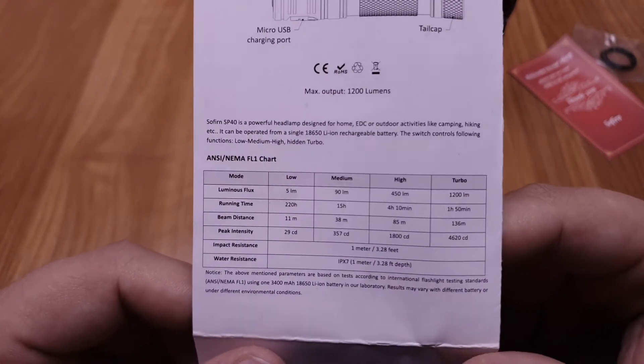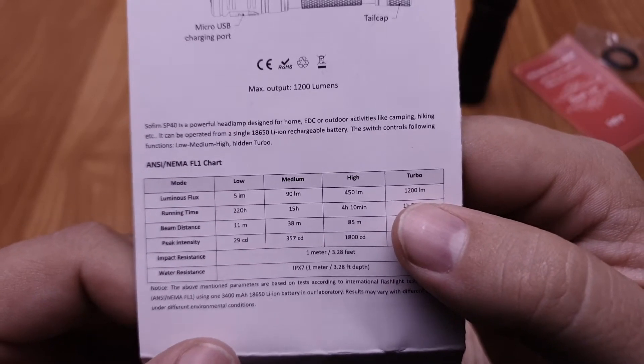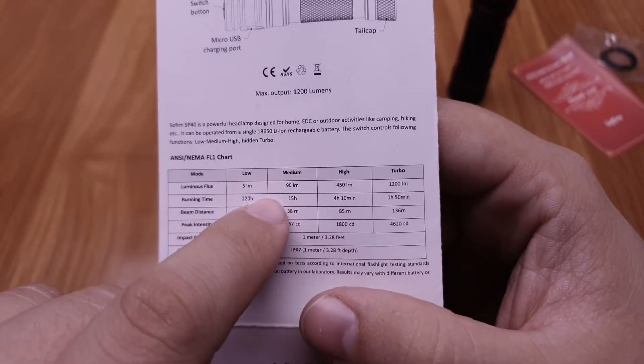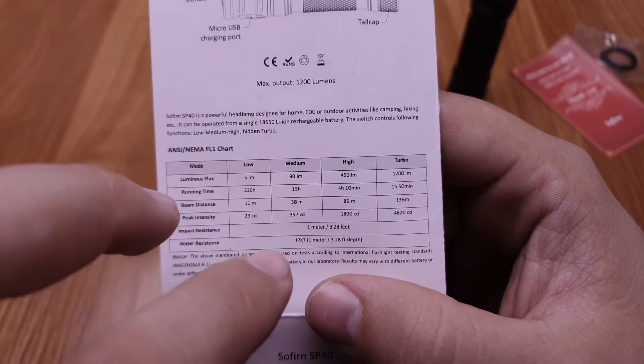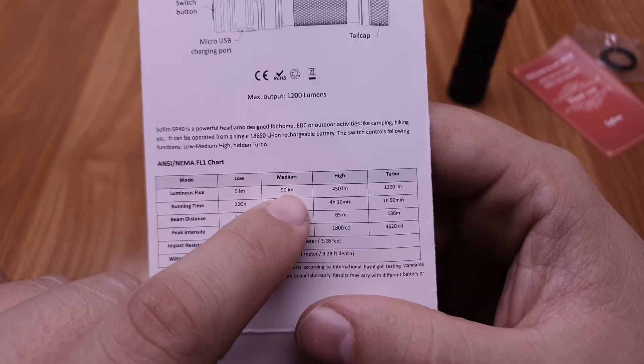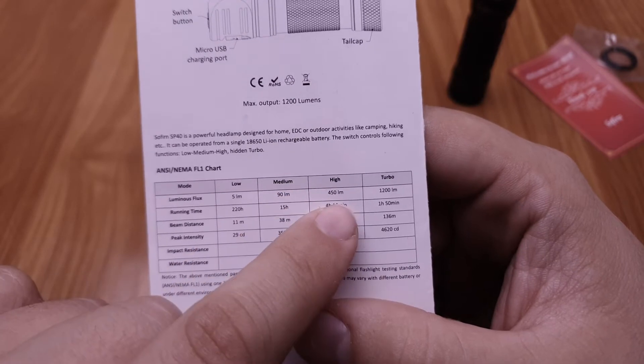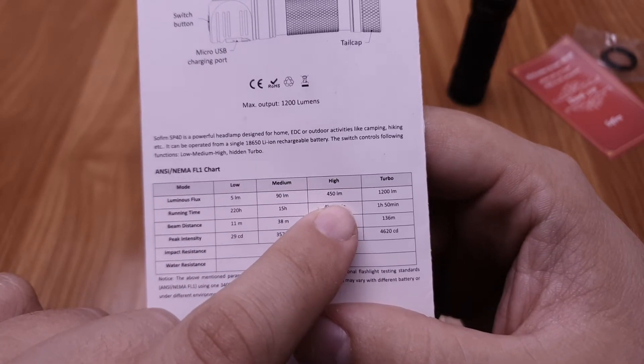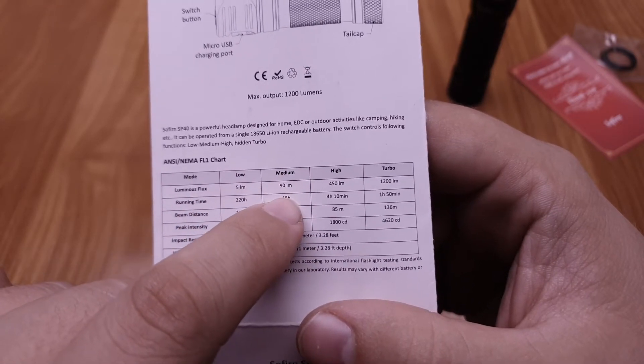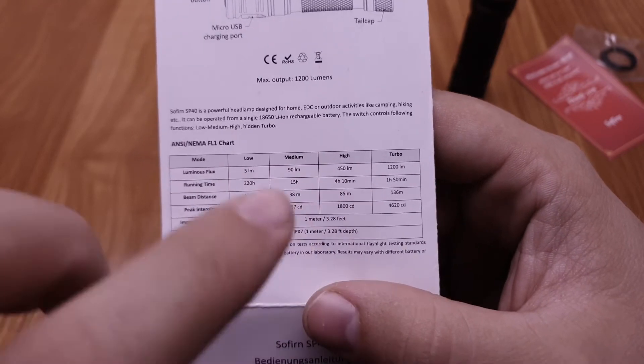So, the turbo mode is 1200 lumens claimed. I measured 1000 lumens, which is pretty okay. And what is not perfect, I think. From the 5 lumen low to the medium it's okay. But medium is a bit low for regular use. And high gets the light warm up a bit. So maybe if medium were not 90 lumens but 150 it will be a bit better.